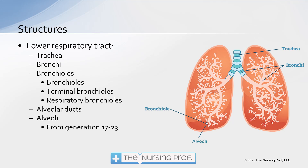Then we move into our terminal bronchioles, and then finally into our respiratory bronchioles. Those are the ones way out there that are attaching to our alveolar ducts. We move then into the alveolar ducts, and finally into the alveoli. Notice that under alveoli, it says from generation 17 down to about generation 23. So we have several branchings occurring here, about 17 before we hit an alveolus.